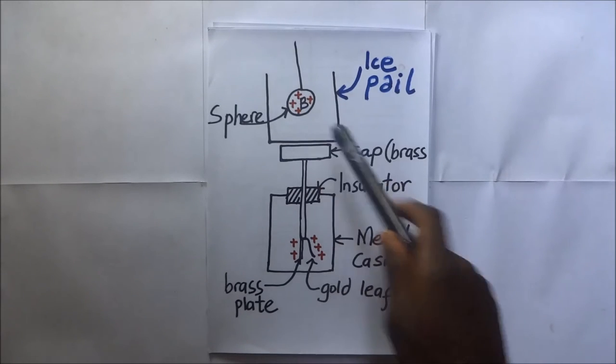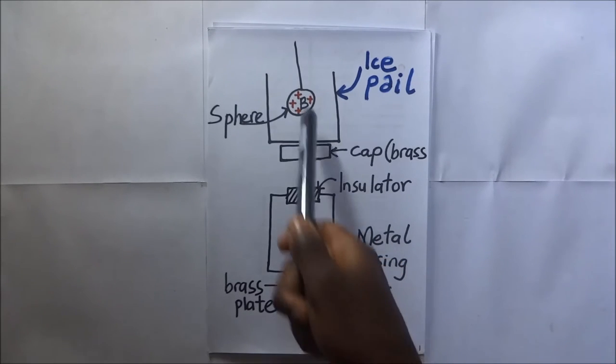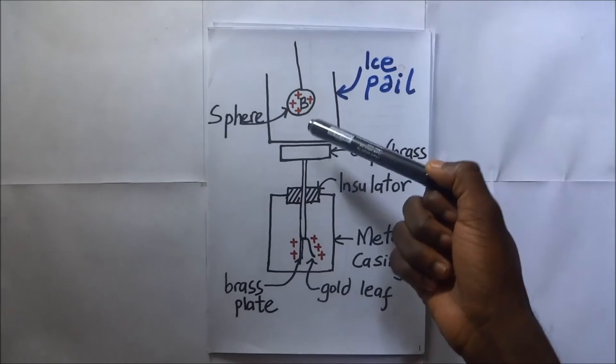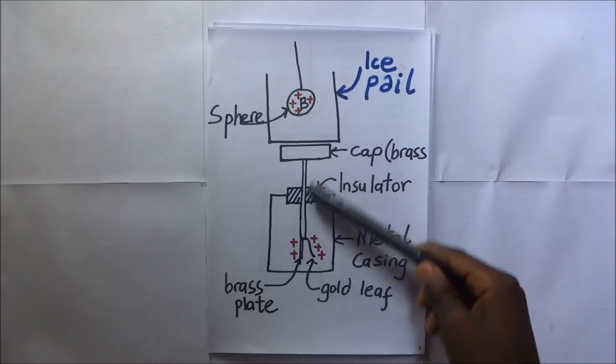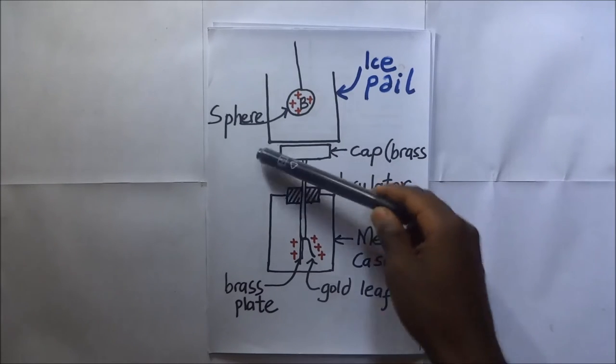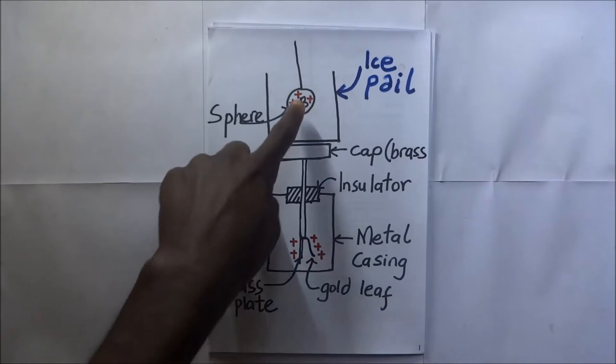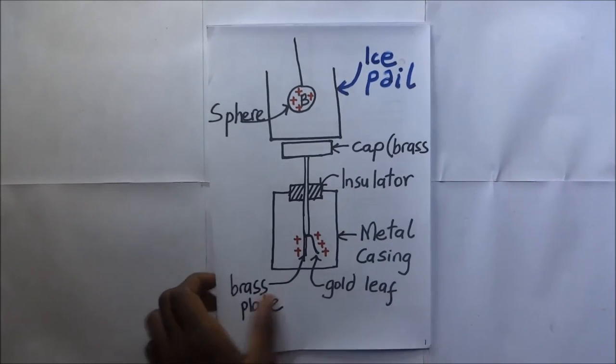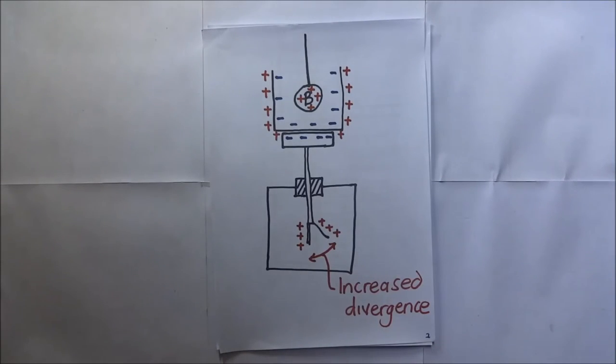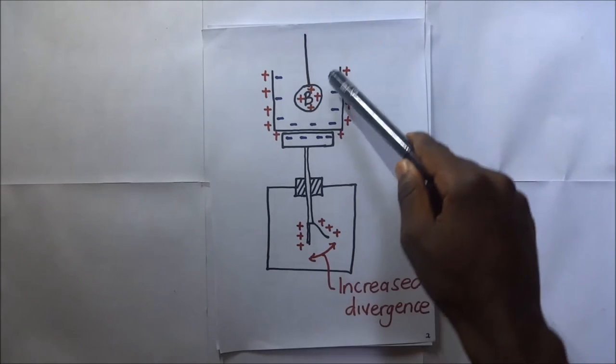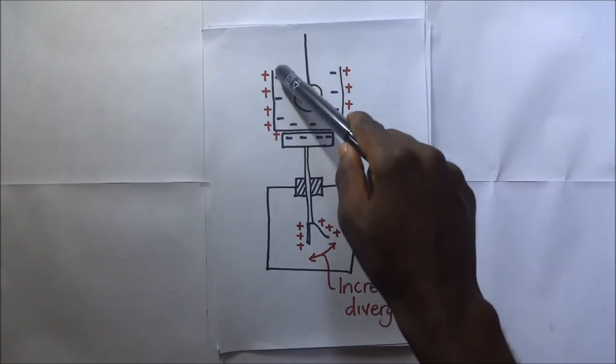Now when we put this sphere and leave it hanging in space, what exactly happens? Because this is a sphere that is positively charged, and this setup is put on a gold leaf electroscope that is also positively charged. So what exactly happens when this sphere is in here?